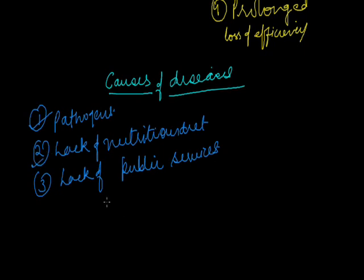Lack of nutritious diet — absence of nutrition — makes a person unhealthy and susceptible to various diseases. Lack of public services is the third cause: the government should provide clean drinking water, sewage disposal, and proper garbage disposal. If public services are poor, there are more chances of contamination of food and water. Poor people, due to poverty, live in unclean surroundings where basic amenities are lacking and may suffer more from diseases. So there are three level causes: pathogens, lack of nutritious diet, and lack of public services.